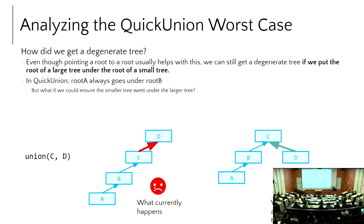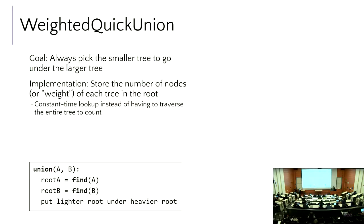What I described in the practice — the tree with the most nodes absorbs the smaller — is called weighted quick union. The goal is to always make sure that when combining two trees, the smaller one becomes the child of the bigger one. In the practice it was pretty direct to look at the trees visually and see which was larger. Six had all those levels and two was just a single node.